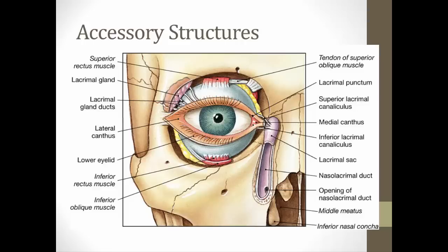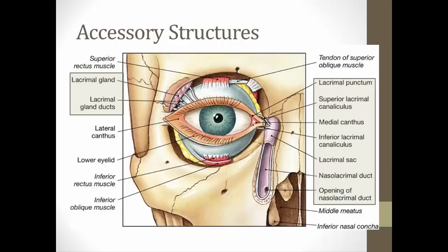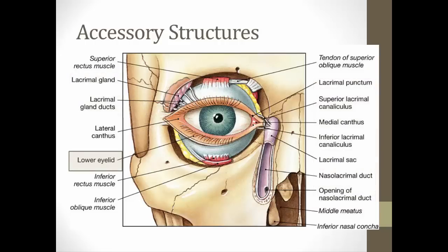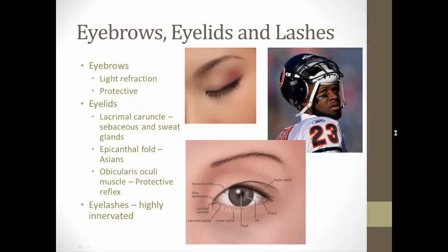First, looking at the accessory structures — this includes the muscles of the eye, the lacrimal apparatus, the lower and upper eyelids, and other structures like the eyebrow and eyelashes. The eyebrows are designed for two reasons: one is protective, in that any sweat falling down your forehead would be blocked by the eyebrows and prevented from entering your eye and causing irritation.